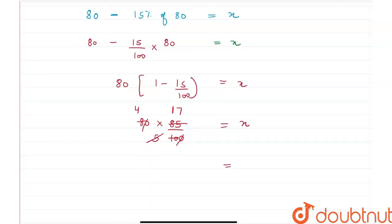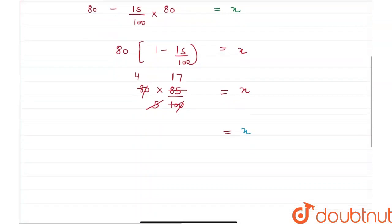Therefore, my x would be 17 into 4, that would be equal to 68. Therefore, this is the decreased amount, and this is our final answer. Thank you.